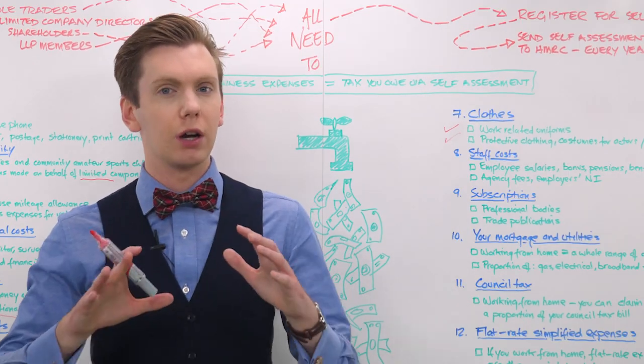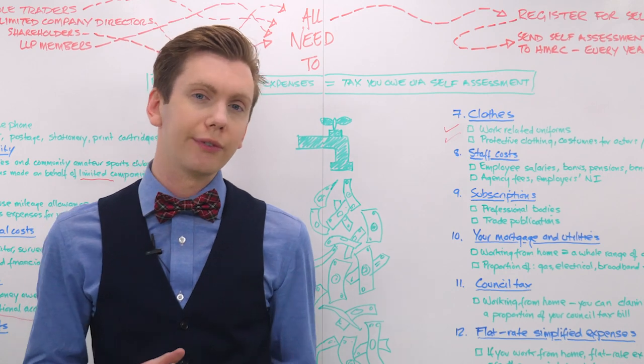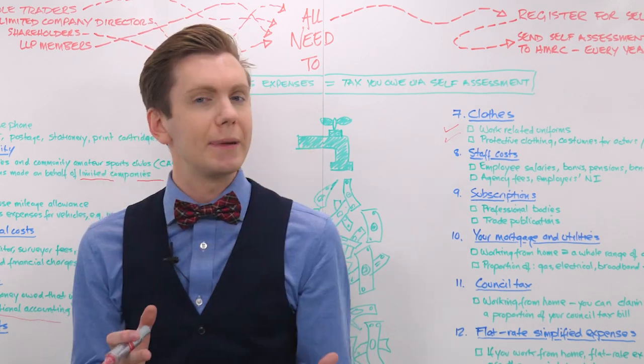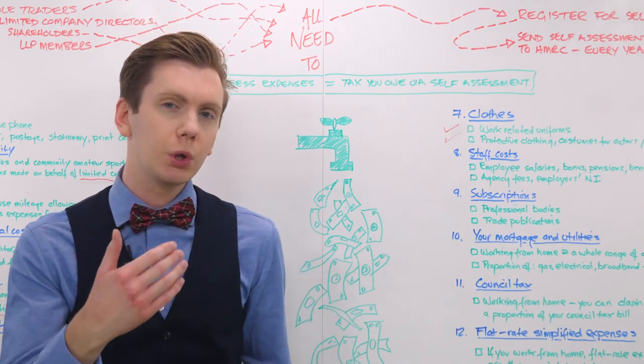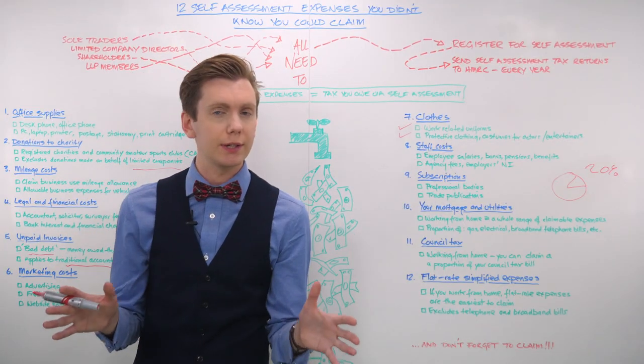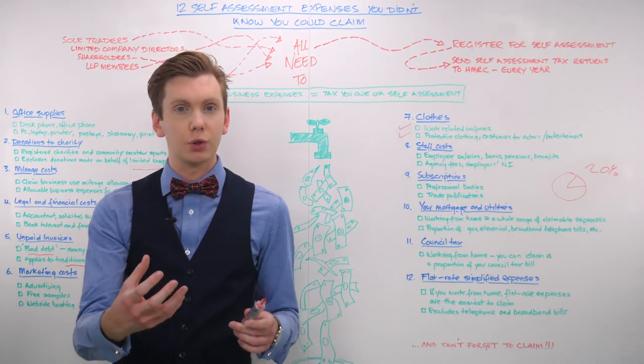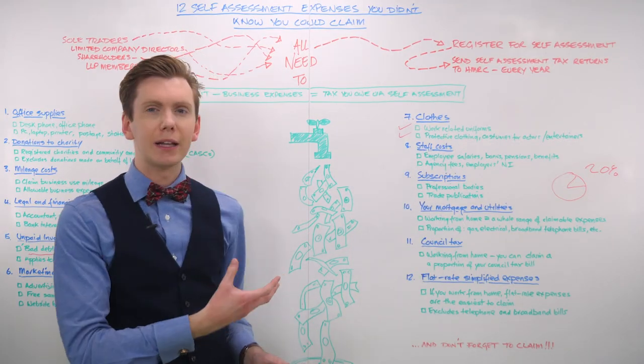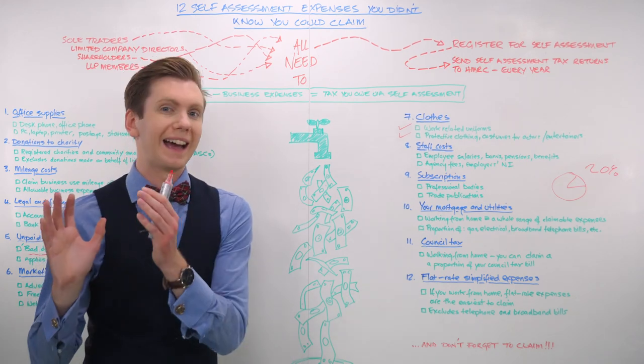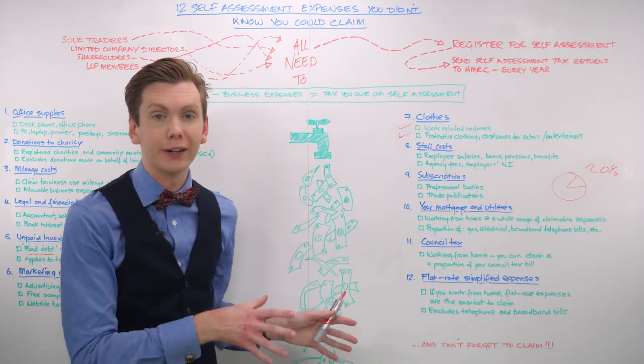It does not include broadband or telephone expenses, so you can claim these costs in addition to the flat rate. While simplified expenses are quick and easy to include in your self-assessment tax return, you may find that you're missing out on the opportunity to deduct more business costs from your tax bill. HMRC's online expenses tool will help you determine whether it's better to claim simplified expenses or calculate the actual costs of working from home.